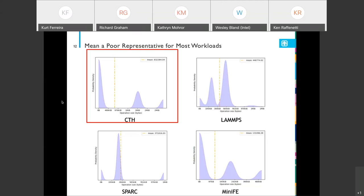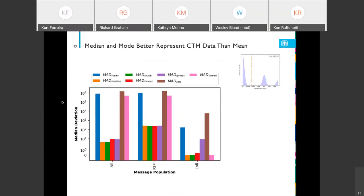I'm going to look a little closer at CTH. I'm showing you a different figure. This is the plot of the median absolute deviation, or the MAD. The y-axis is that value. A lower value signifies a better fit. Note that the y-axis is log in this case. The x-axis here is the message population. To your farthest left, you'll see all of the messages accumulated, and then as I move right, I break it apart to just point-to-points and just collectives.